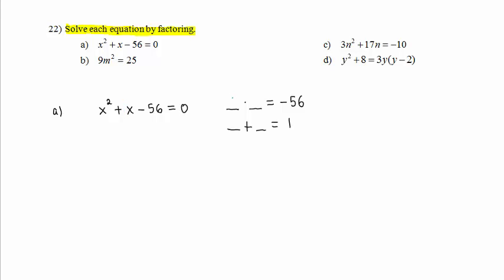The two numbers that do that are 8 and negative 7. Again, because we are using the shortcut for the situation where the leading coefficient is 1, we can write x plus 8 times x minus 7 equals 0.